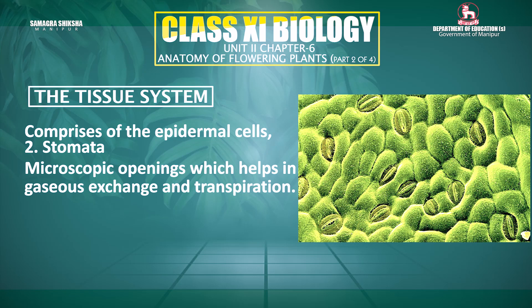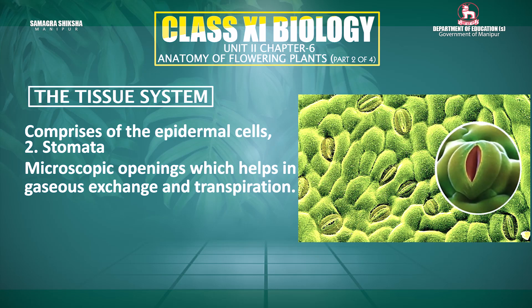Stomata consist of a stomatal aperture which is flanked and surrounded by two bean-shaped guard cells. The guard cells contain chloroplasts for photosynthesis.